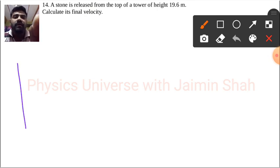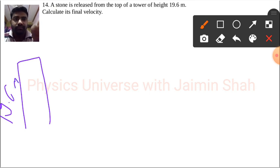So here we are having one tower and the tower having a length which is 19.6 meter. Now it releases from here and we have to find final velocity here.